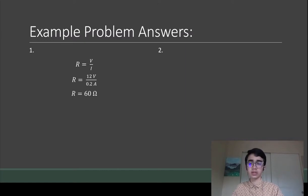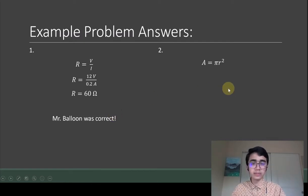We get an answer of 60 ohms, so Mr. Waleed is correct - the 60 ohm resistor is the appropriate value. For the second one, the first thing we need to do is calculate cross-sectional area.